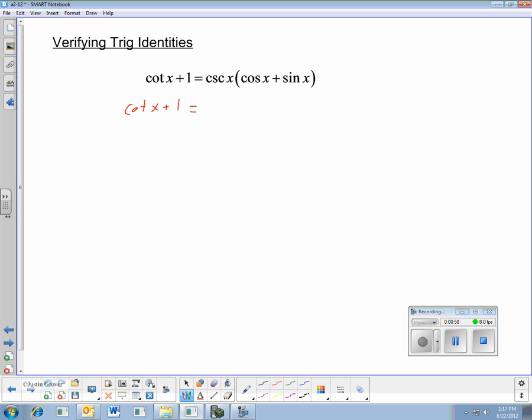And there's a couple ways you could go here. Cosecant x, I can change that to a reciprocal. But first, I actually want to distribute that into the parentheses here. So I'm going to make this cosecant x and cosine x plus cosecant x sine x.